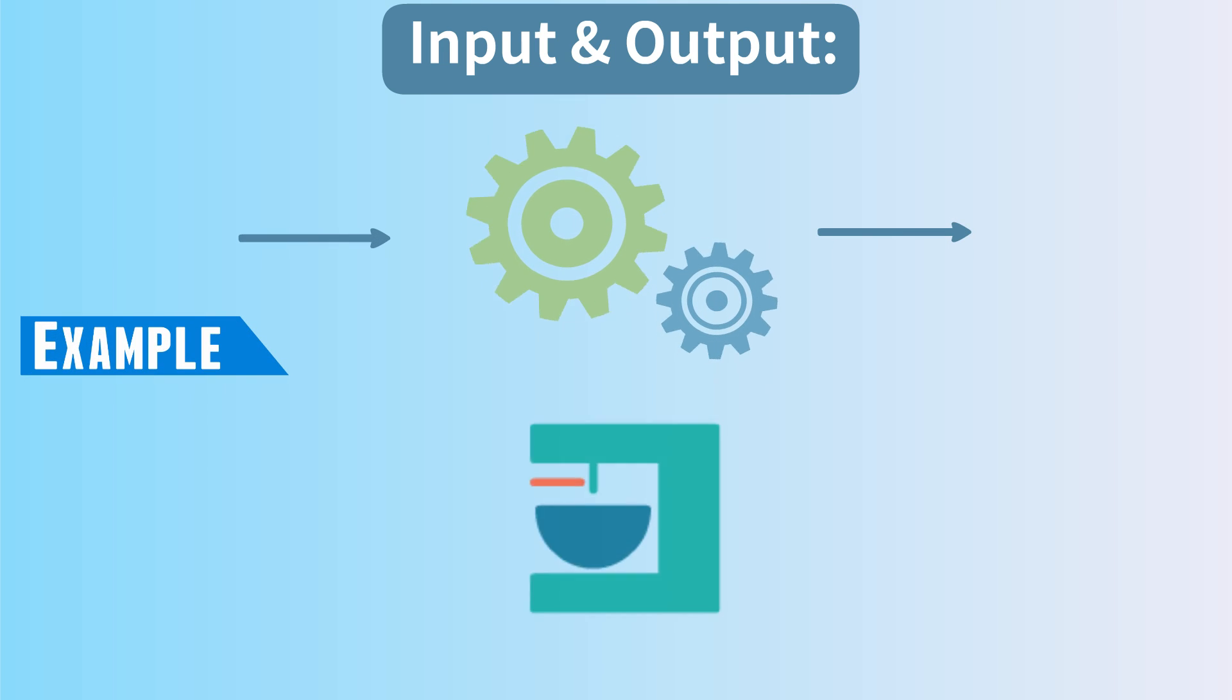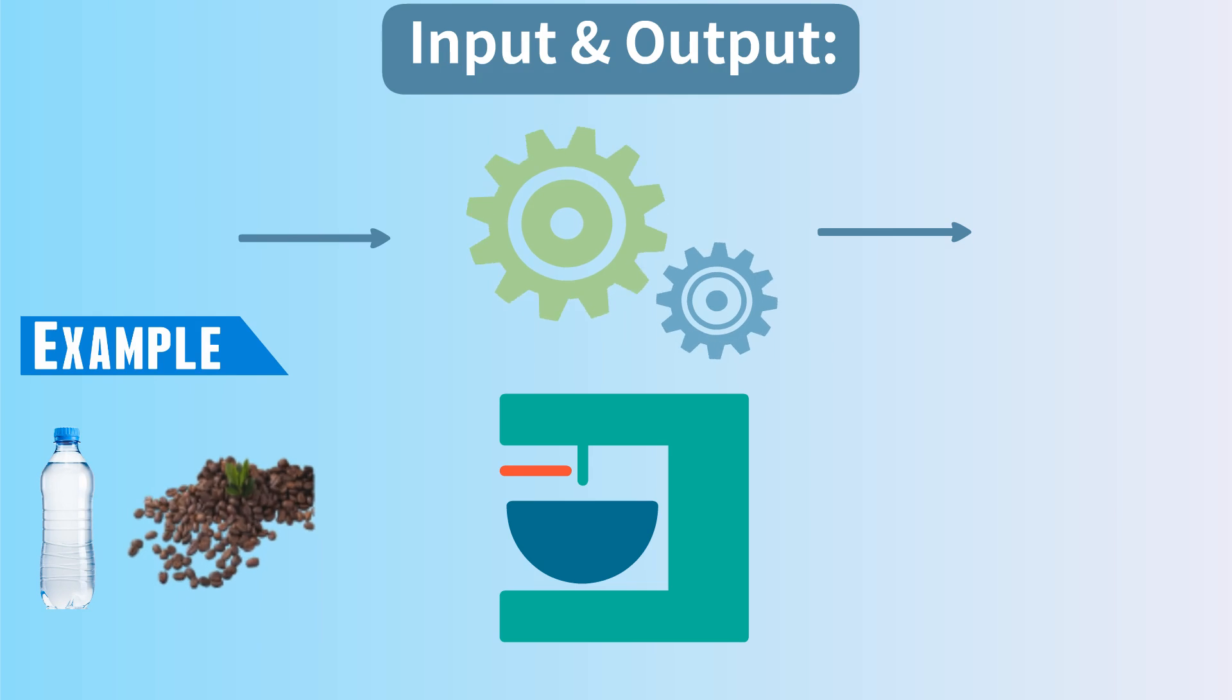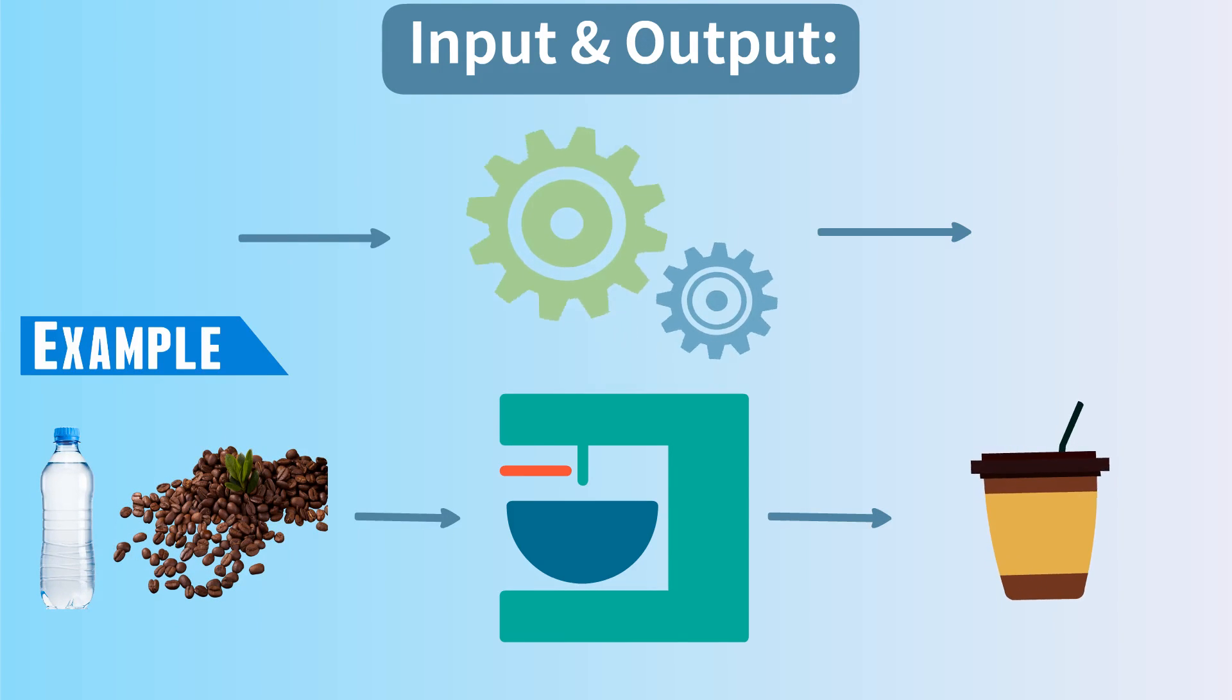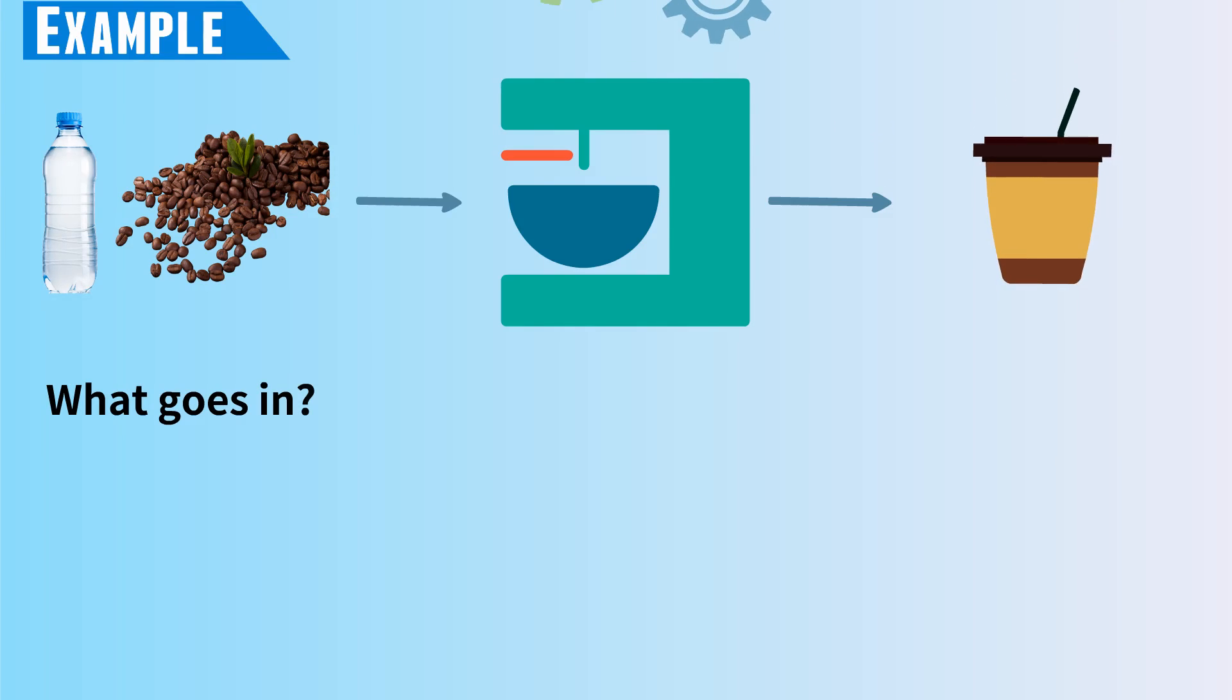Input and output: In any system, something goes in and something comes out. For example, in a coffee making system, water and coffee grounds go in and coffee comes out. System analysis helps us understand what goes in, what comes out, and what happens in between.